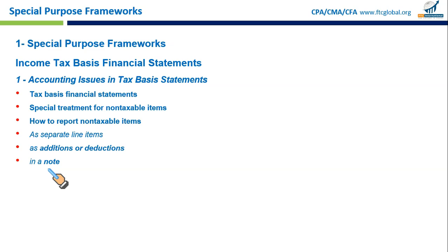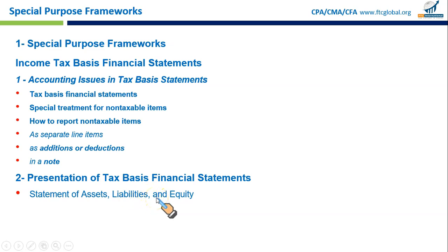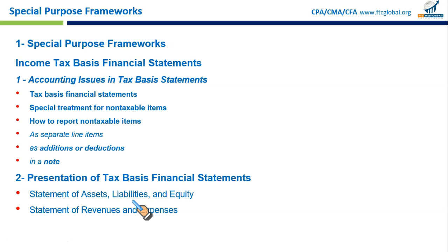For presentation of tax basis financial statements, the Statement of Assets, Liabilities, and Equity — a kind of balance sheet — lists what the company owns, what it owes, and the owner's equity based on tax rules. For example, a company might show equipment as an asset and a loan as a liability, both calculated according to how they are reported for tax purposes.